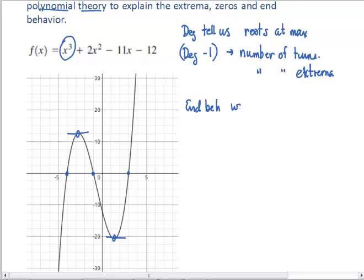So the highest power term tells us that our end behavior will look like an x cubed function. And sometimes they ask us with end behavior to describe that using limits.